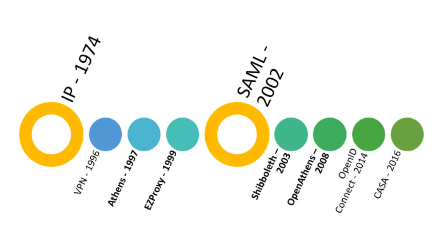Let's look at the advanced access methods period, which started in 2002 with the emergence of SAML — Security Assertion Markup Language. Right after it was released, the Internet2 project put foundations for Shibboleth, an open-source SAML software. Then in 2008, Athens changed its name to OpenAthens to reflect the adoption of open standards and ditched the proprietary Athens agent. In 2014, Ping, Microsoft, and Google came together and created OpenID Connect Protocol — the next-generation federated access tailored for the mobile era. And in 2016, Google came out with CASA, or Campus Activated Subscriber Access, which we've just looked at.